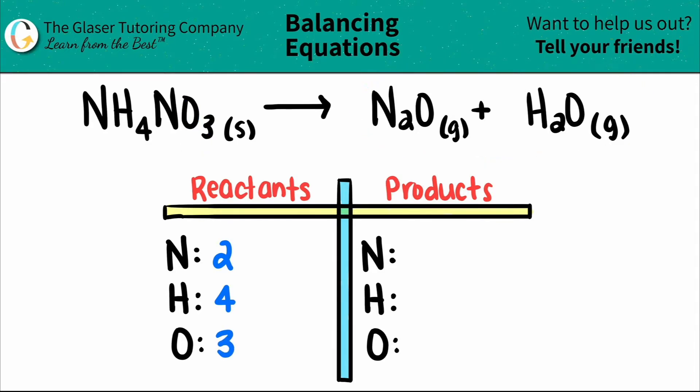Coming to the product side, for the nitrogen, I have a two here. So I have two nitrogens. Now for the oxygens, just be careful. I have an oxygen here plus some oxygen over here. But for both of them, I have ones because there's no subscript after. So one plus one is a total of two total oxygens. And then for the hydrogens, I see that I have a two here. So I have two hydrogens.